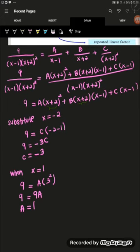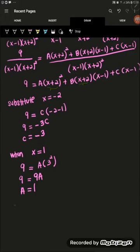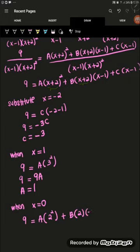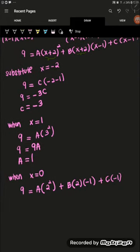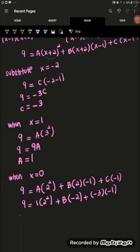To find the value of B, we can choose any value of x. Let's substitute x equals 0. So 9 equals A times (0 plus 2) squared plus B times (0 plus 2) times (0 minus 1) plus C times (0 minus 1). We already know A equals 1 and C equals negative 3. Substituting: 9 equals 4 plus B times 2 times negative 1 plus negative 3 times negative 1, giving us B equals negative 1.